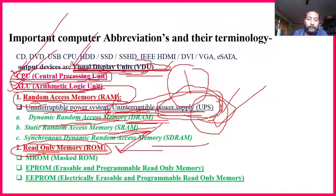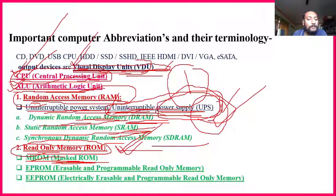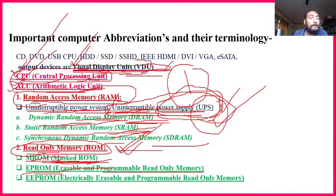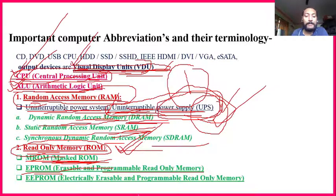Under ROM, you should know MROM. In the 2018 paper, they asked where MROM is located — the correct answer is under ROM. EPROM stands for Erasable and Programmable Read Only Memory — you can erase the memory stored there. Erasing means deleting or formatting. Sometimes you delete a picture or format your mobile, meaning everything is gone. That is possible through EPROM, which is related to ROM.